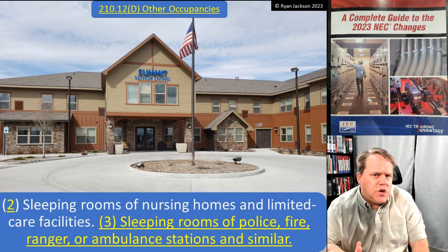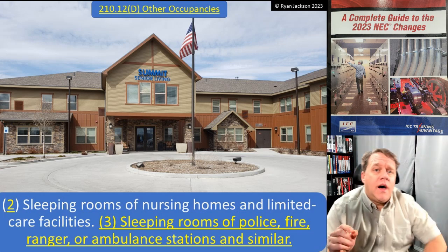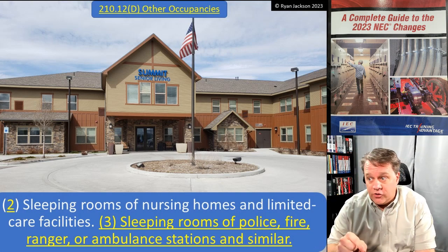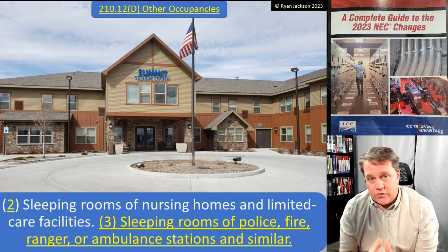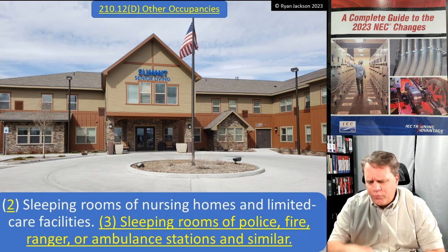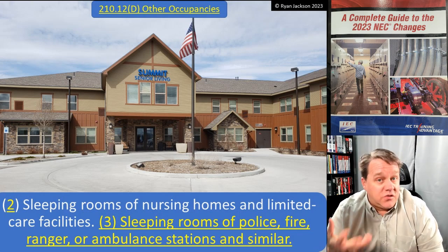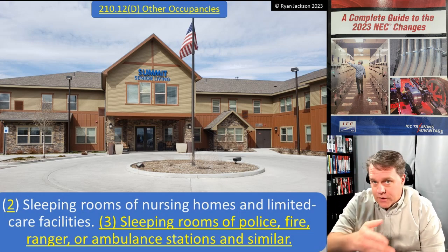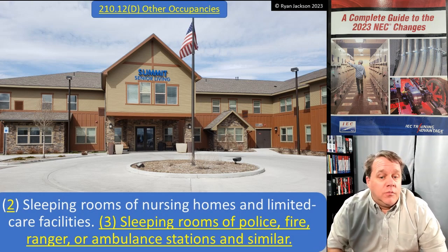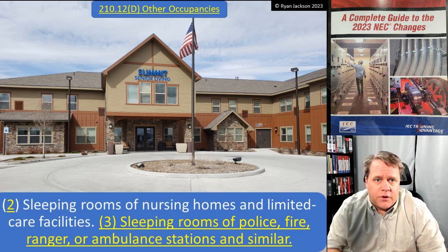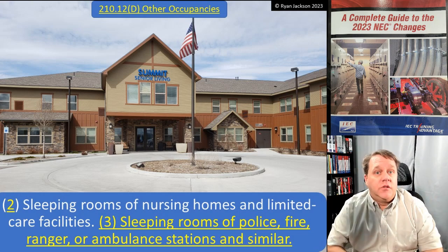This is a fairly predictable evolution when you look at AFCIs starting all the way back in 1999. We started putting AFCIs where people sleep — quite literally where they sleep, which was in dwelling unit bedrooms. Then we expanded to the rest of the dwelling unit and then to more locations. Then we added hotels and motels, then sleeping rooms in dormitory units, then nursing homes and limited care facilities — again, where people lay their heads. Now we're talking about sleeping rooms in police stations, fire stations, ranger stations, and ambulance stations.